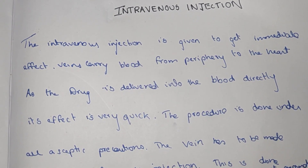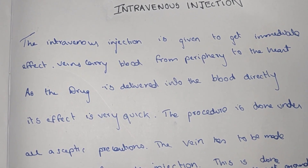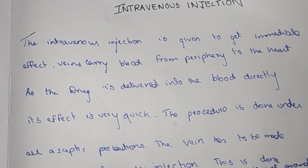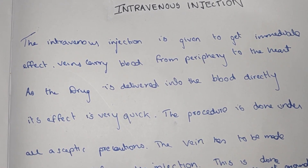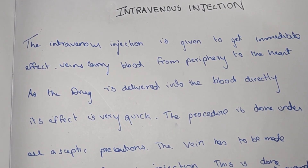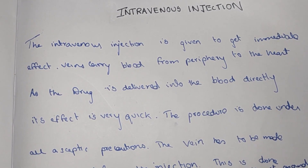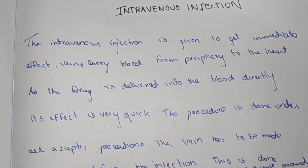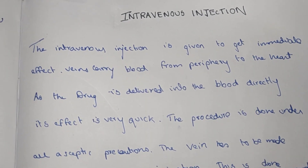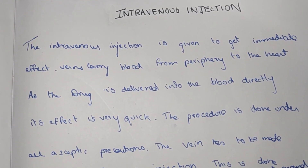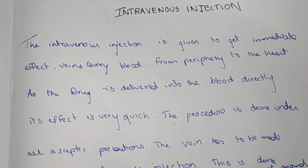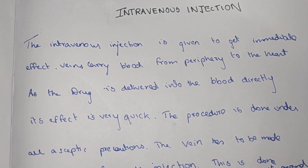When injecting into a vein, the action of the chemical is very fast. The main advantage of the intravenous injection is to get the immediate effect, as the drug is delivered directly into the blood, making its effect very quick.